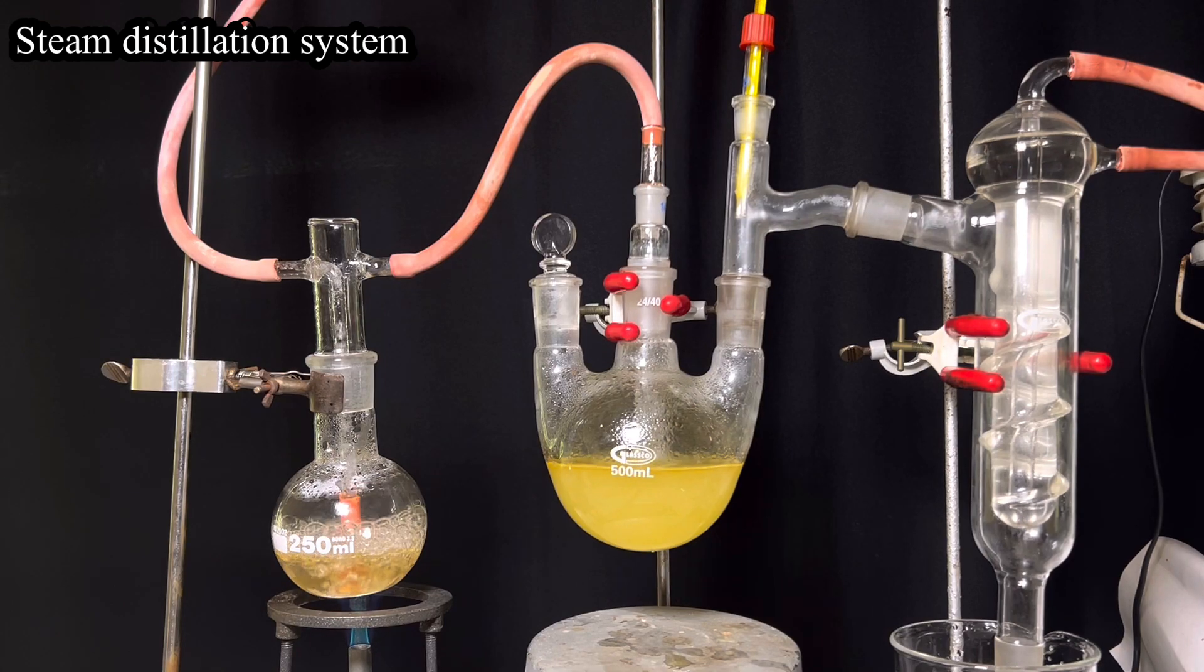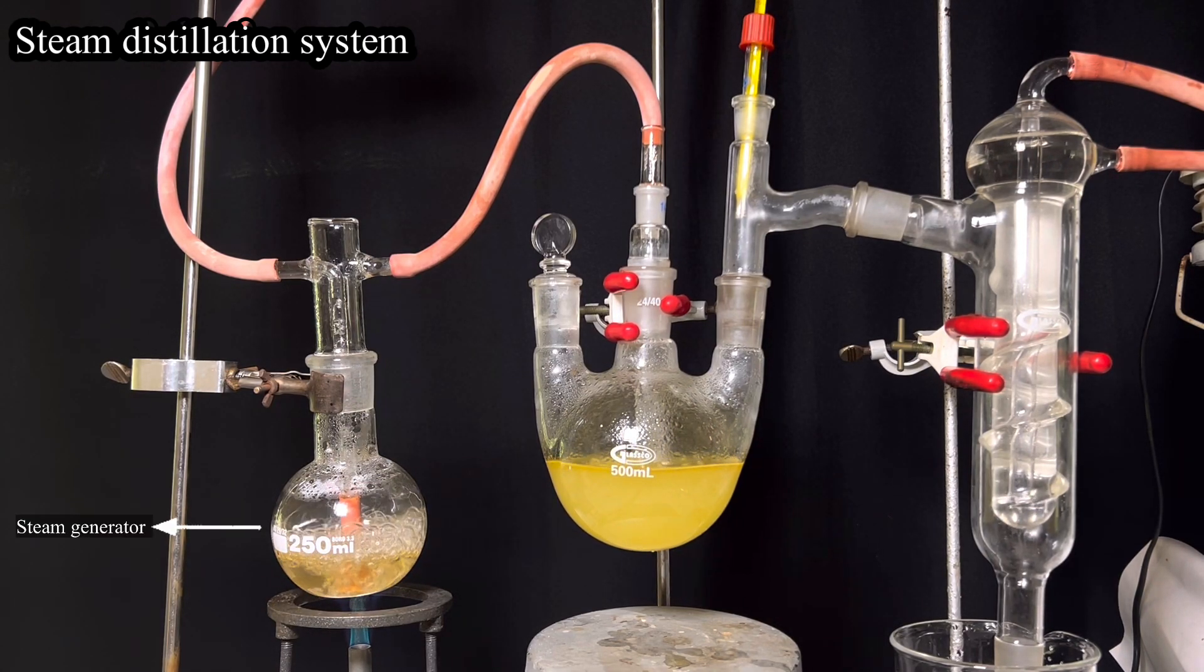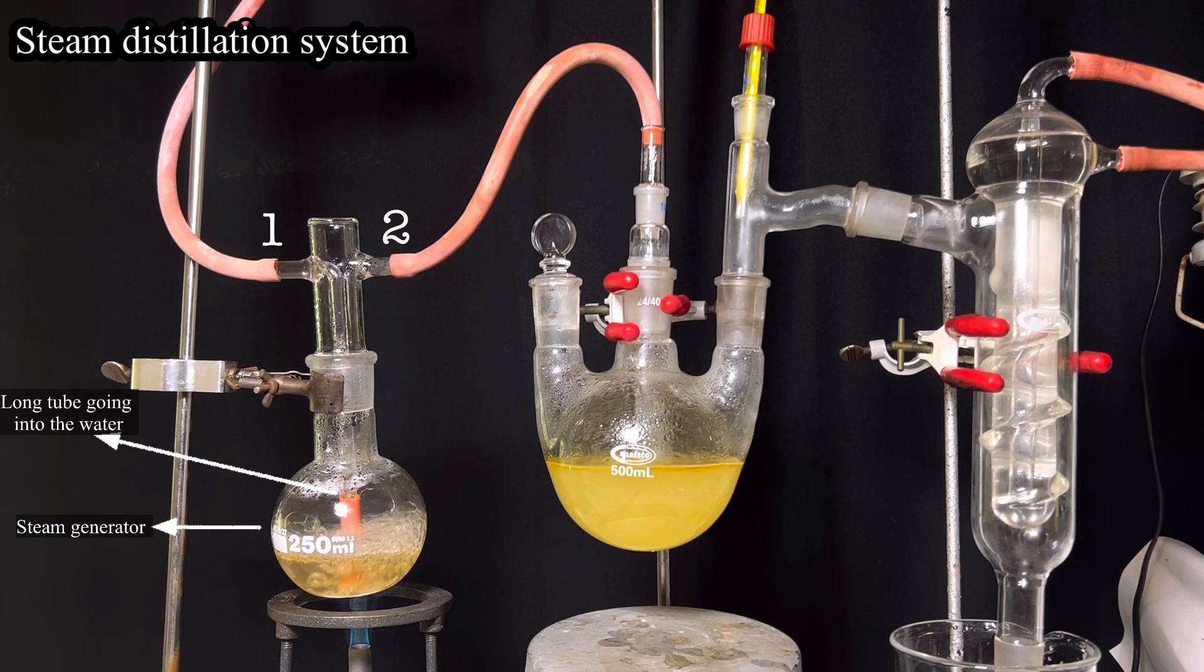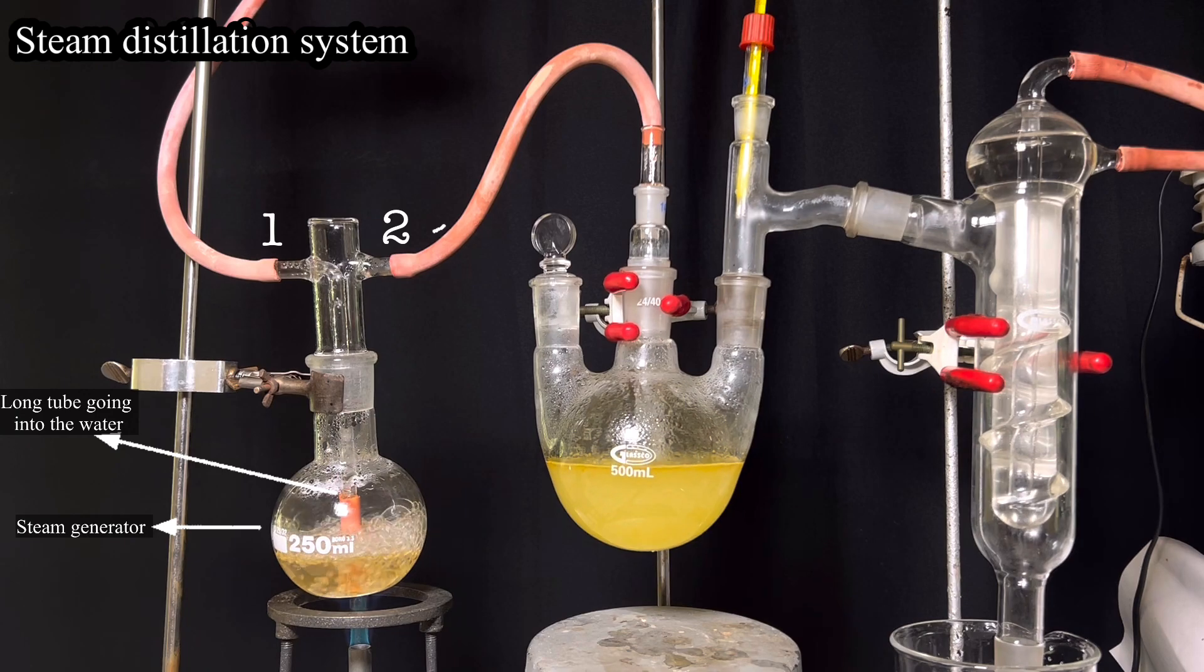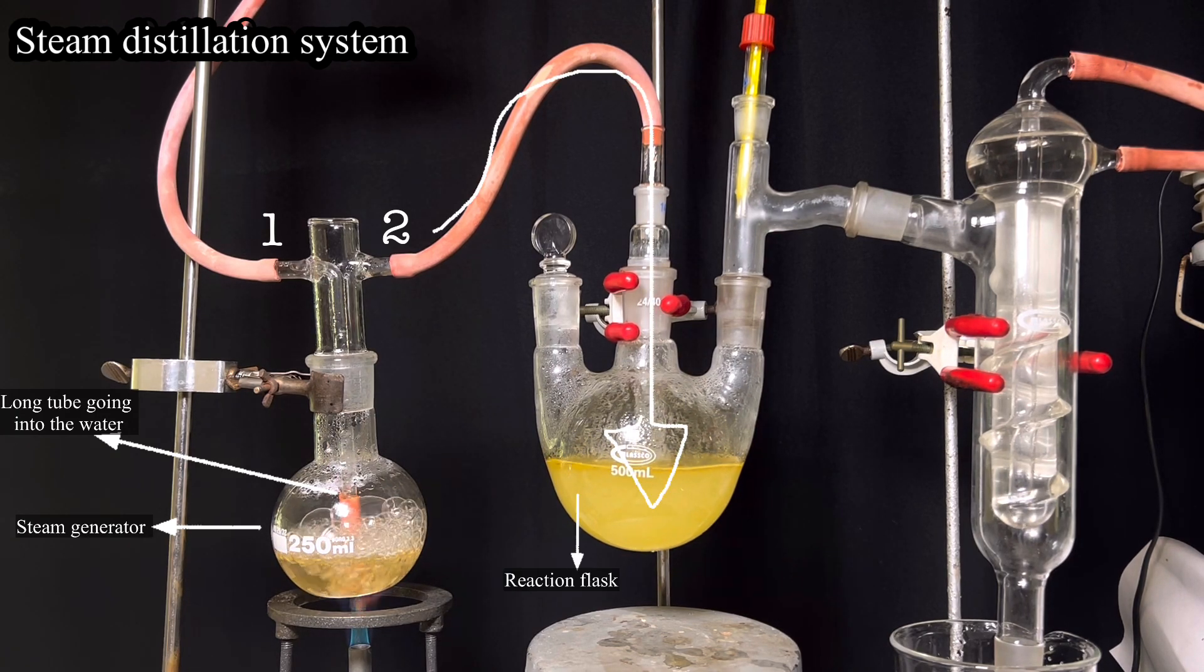Now, we will have the steam distillation system functioning. The flask on the left side is the steam generator flask. It has two openings. One of the opening is a long tube that goes into the water present in the flask. The second opening has a tubing attached to it and this carries the steam to the flask in the center which is the reaction flask.